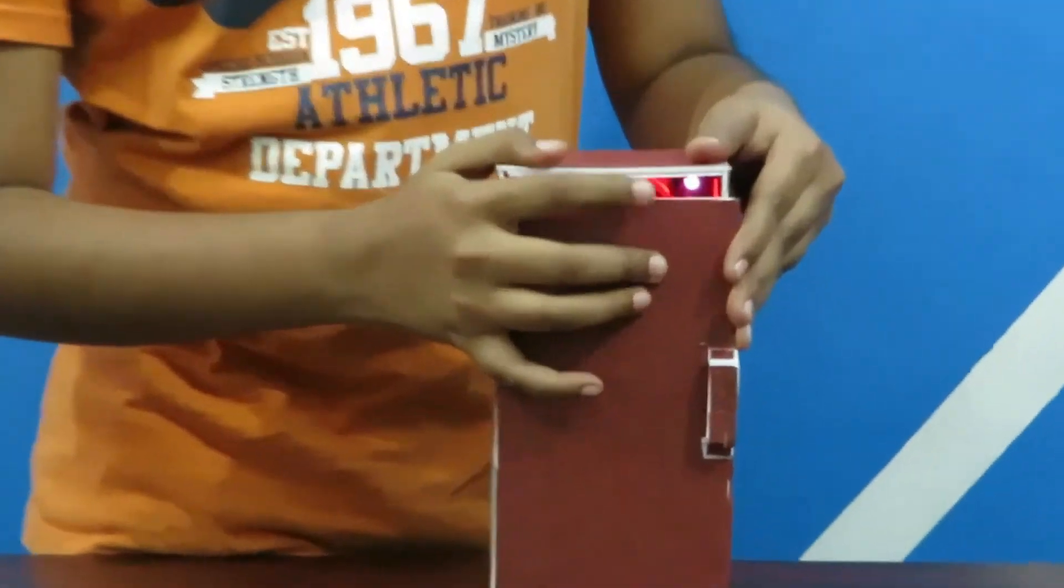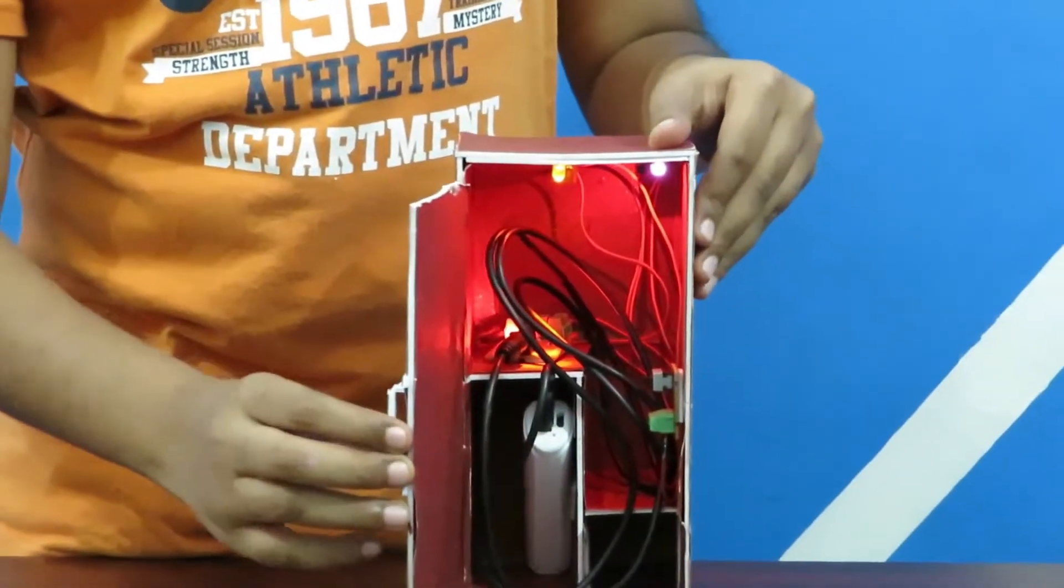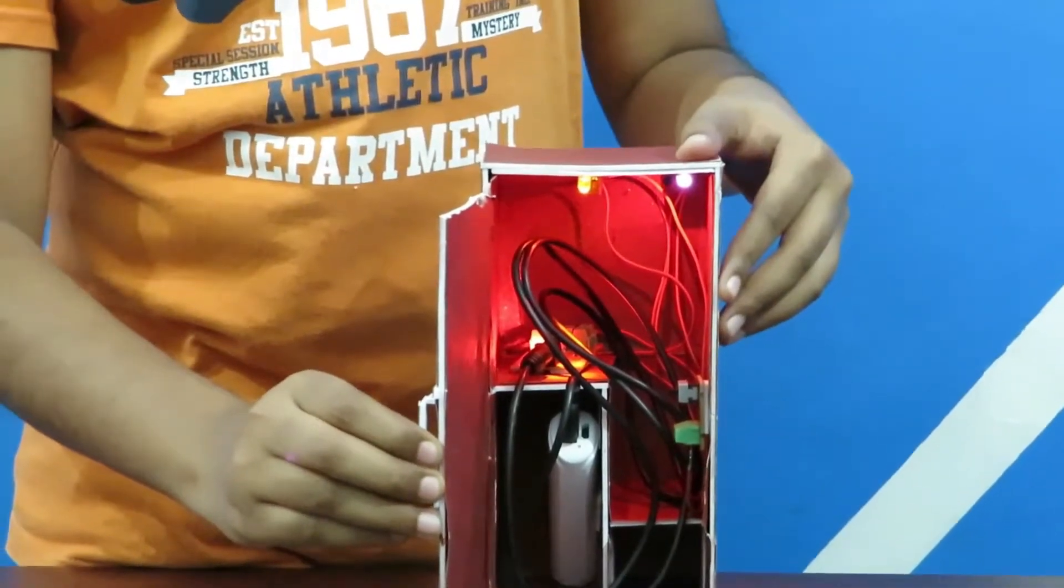If I close the door, the light will be switched off. When I open the door, the light will be on automatically by IR sensor.